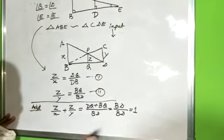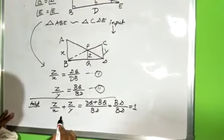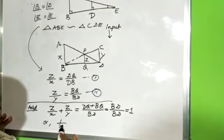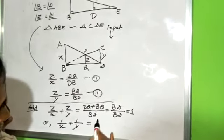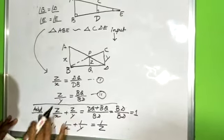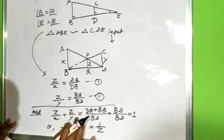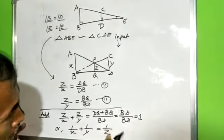Now, multiplying both sides by 1 by Z. 1 by Z, Z cut, Z cut. 1 by X, 1 by Y, 1 by Z.